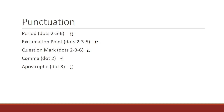Punctuation marks in Braille operate much like the punctuation marks in print. They come before or after the word or letters, just like print. Here are the most common punctuation marks. The period is dots two, five, six. Exclamation point, which is dots two, three, five.